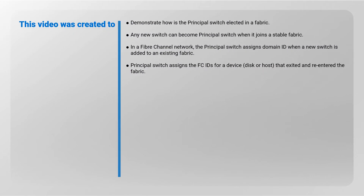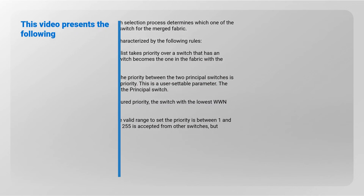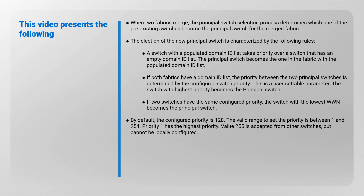Any new switch can become the principal switch when it joins a stable fabric. In a Fibre Channel network, the principal switch assigns domain IDs when a new switch is added to an existing fabric, and assigns FC IDs for a disk or host that exited and re-entered the fabric. When two fabrics merge, the principal switch selection process determines which pre-existing switch becomes the principal switch for the merged fabric.